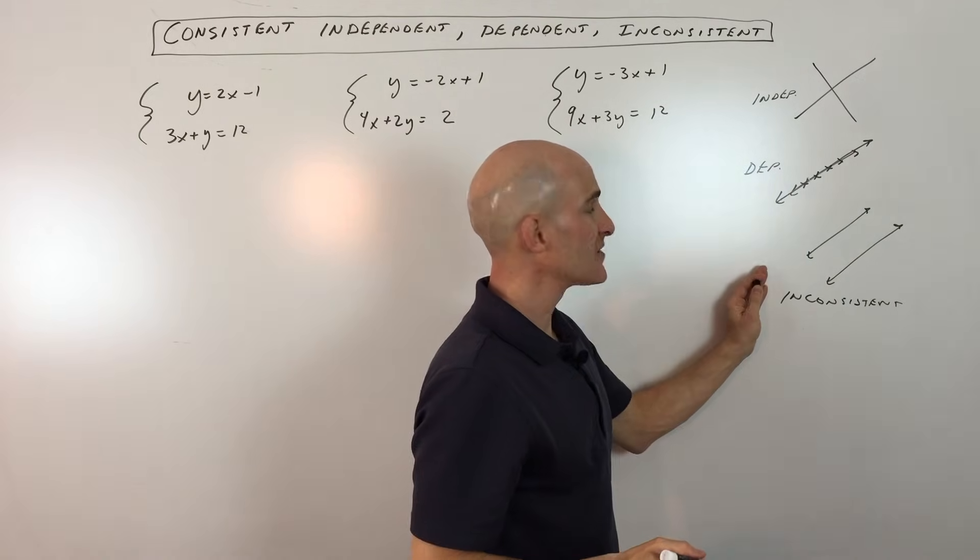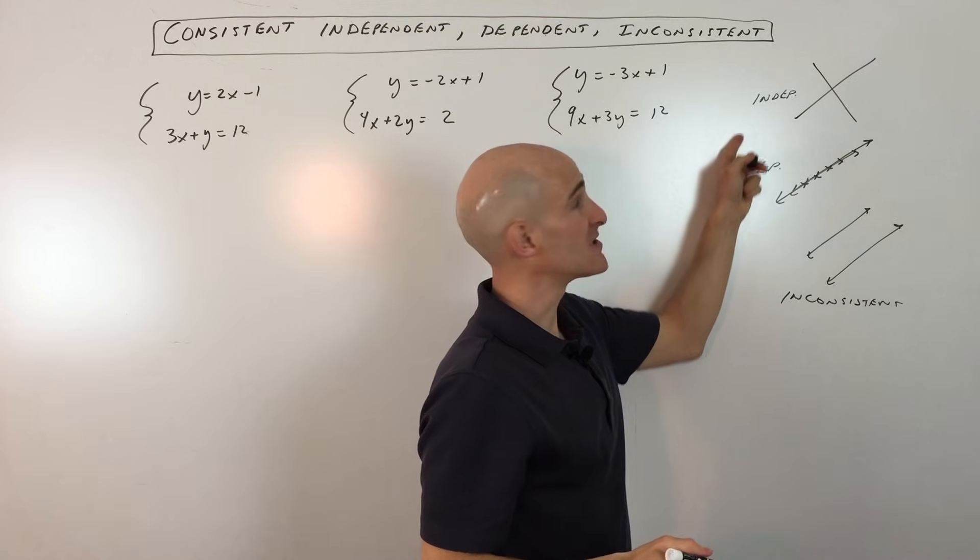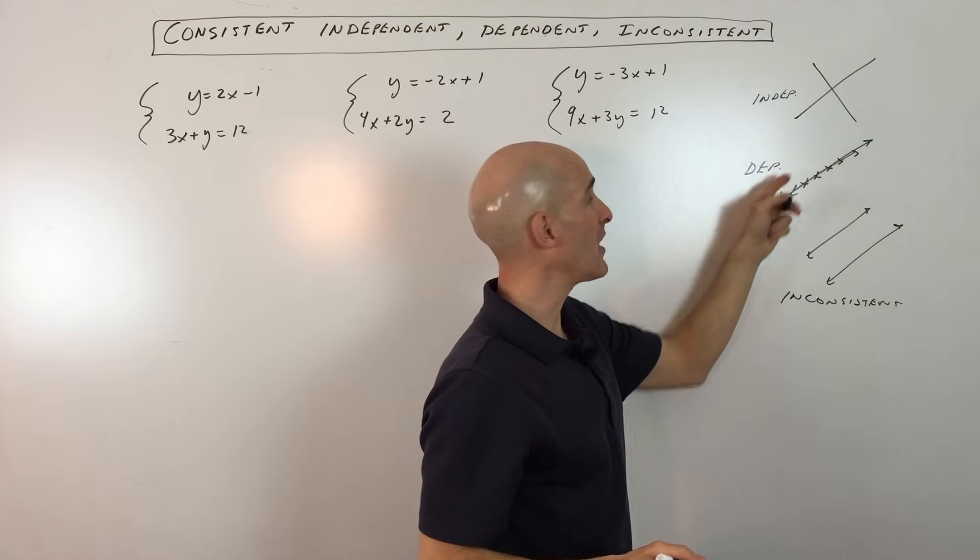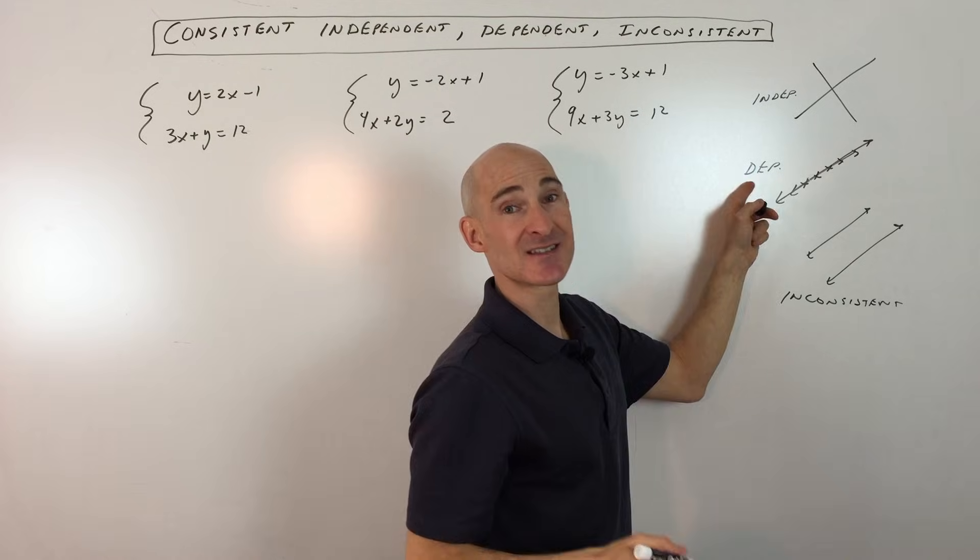So these are consistent, this one's inconsistent, but for the ones that have a solution, the consistent ones, it could be one solution independent or infinitely many consistent dependent.